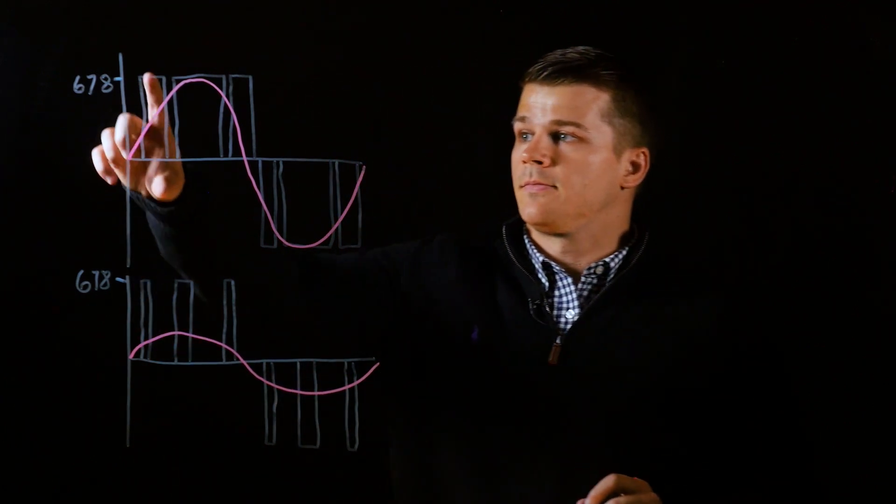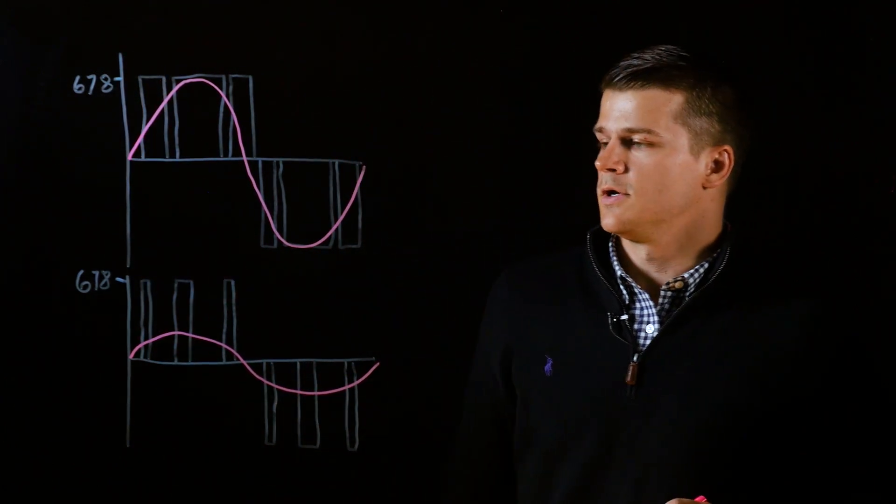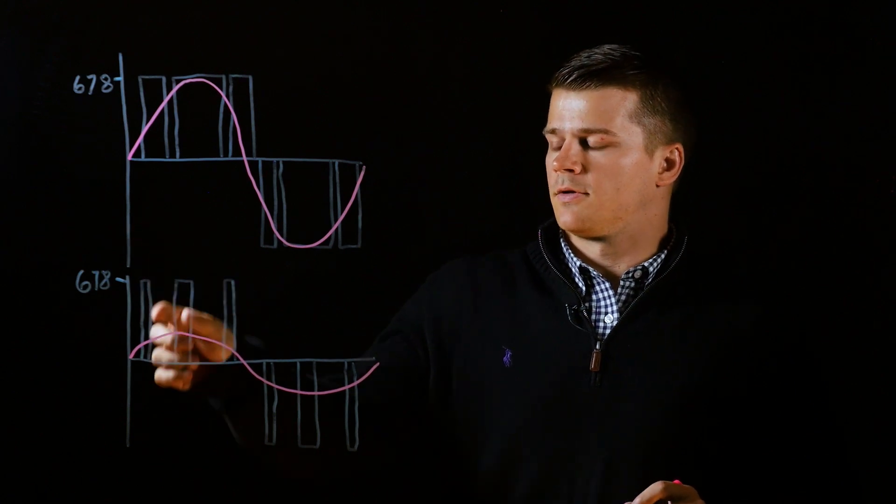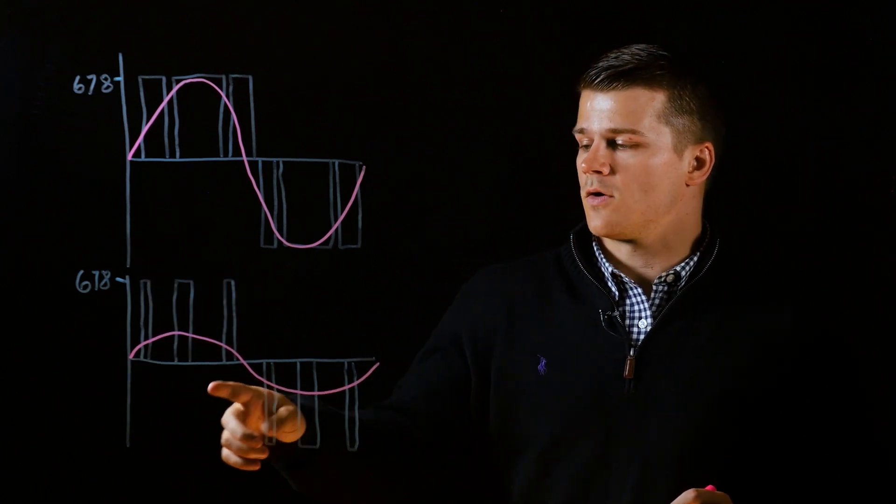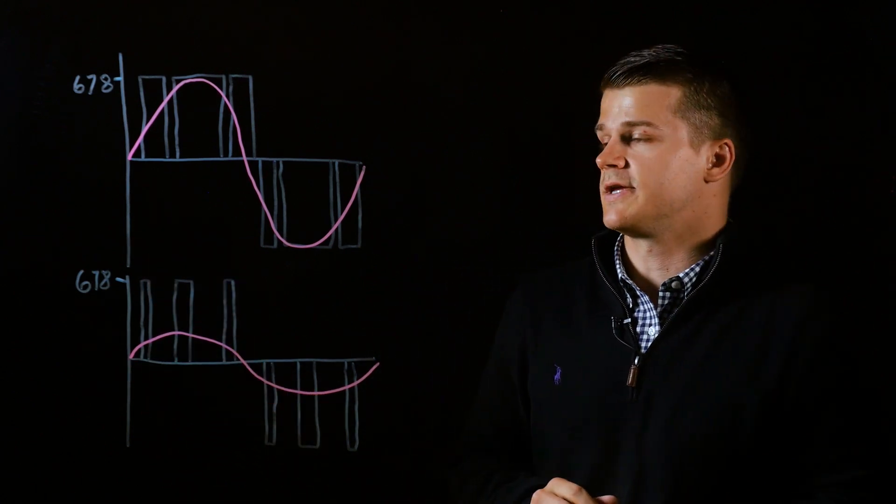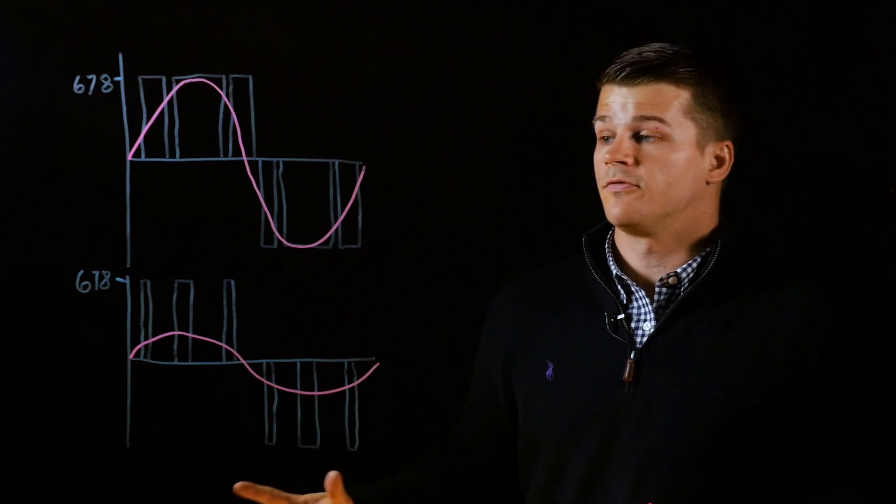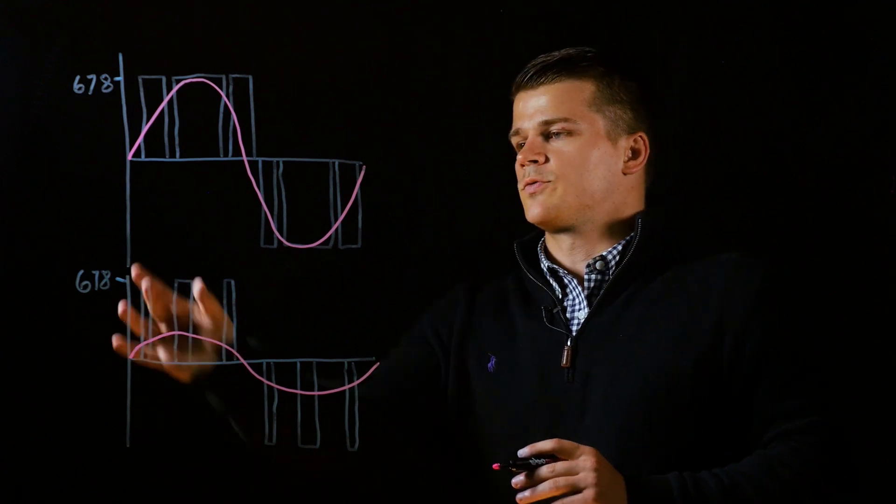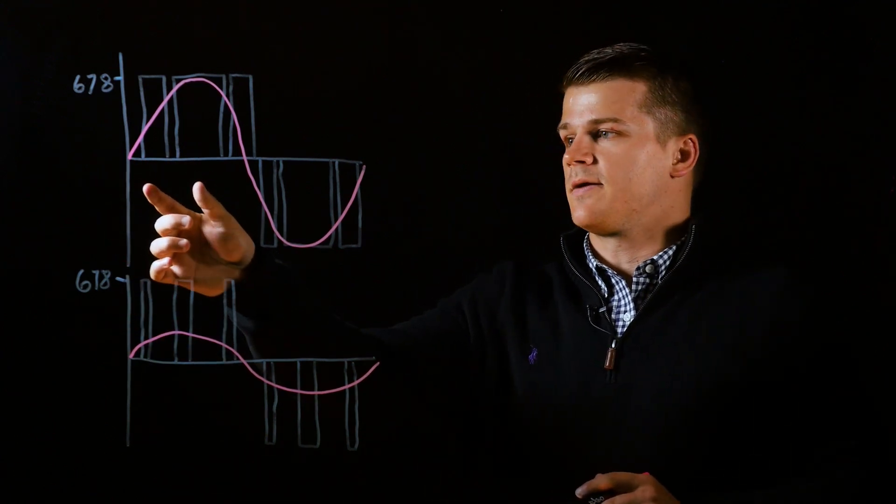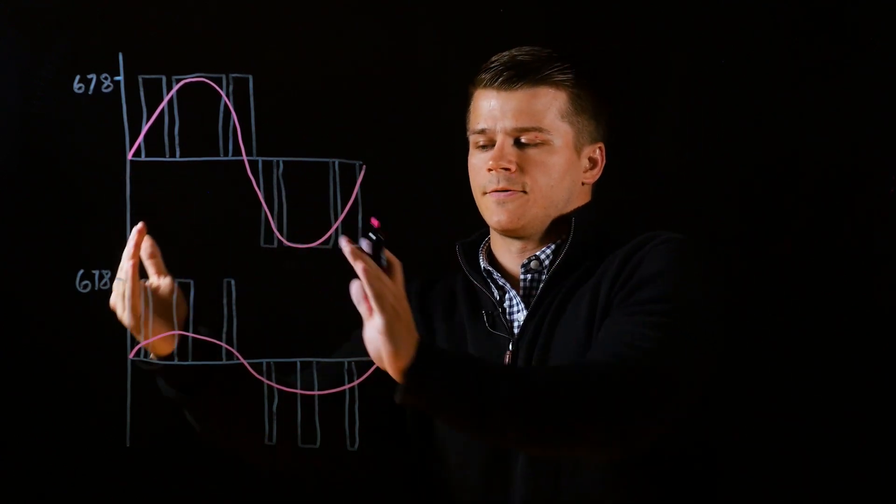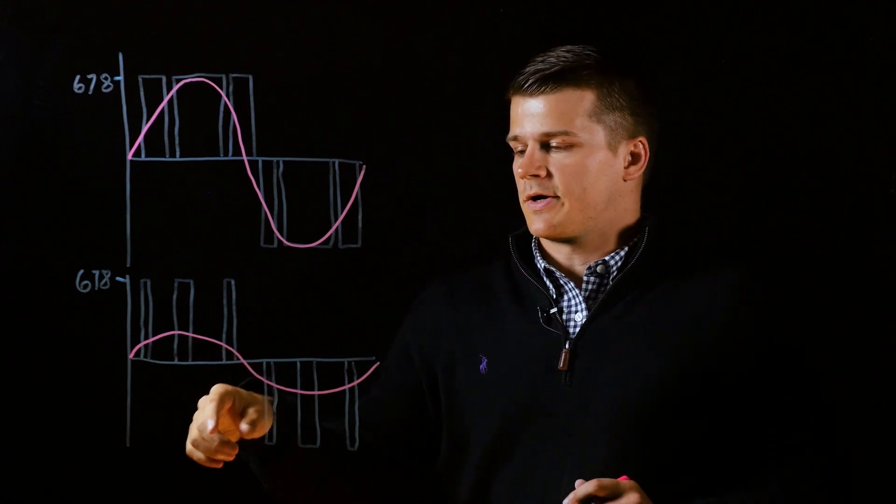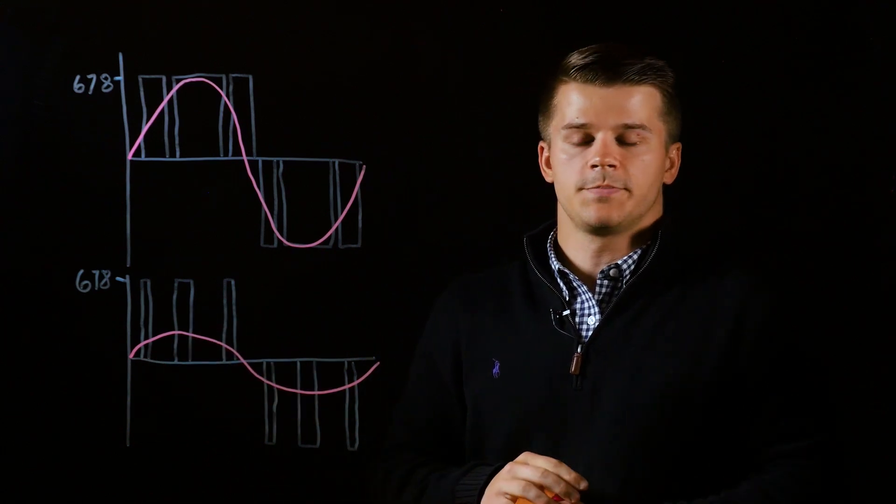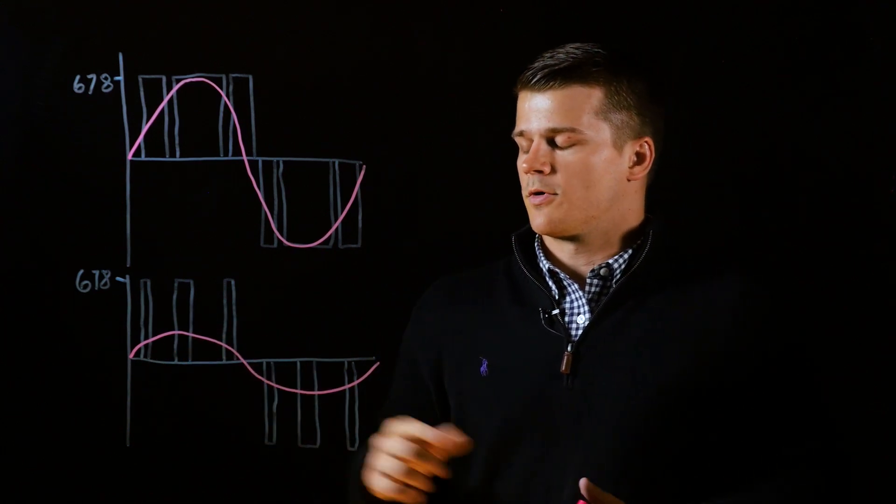So even though we have the same 678 volts pulse, by changing the on and off lengths we can affect how high the RMS voltage output is. So that's the variable voltage portion of the AC output. On the variable frequency portion, what we do is we keep these on and off ratios the same but we squish them all together so it's happening much more quickly. So we have the same RMS voltage peak but it's just occurring much more often.